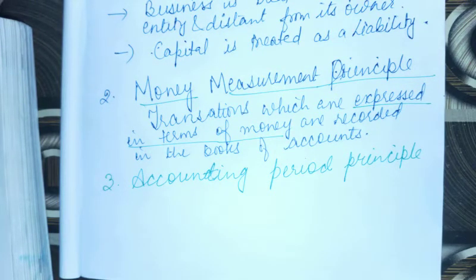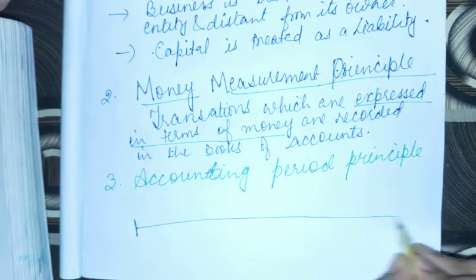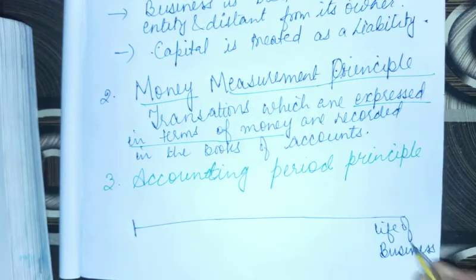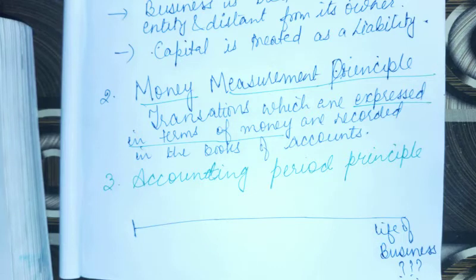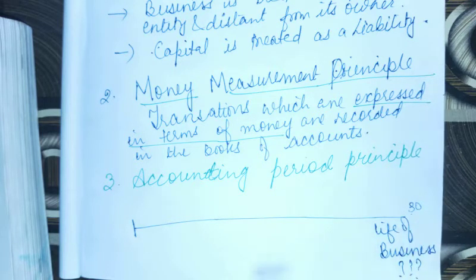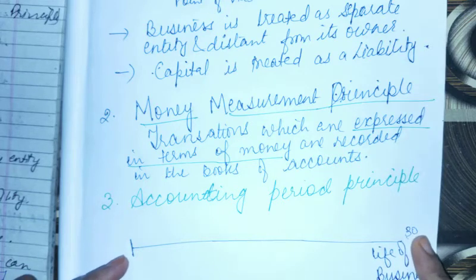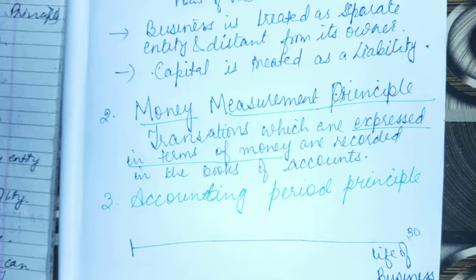आपने पहले Going Concern Concept पढ़ा था — इसमें हम लोग जब भी business start करते हैं, यह सोचकर करते हैं कि हमारा business बहुत लंबे सालों तक चलेगी. माल लो मेरा business 30 years तक चलेगा. तो क्या हम business के 30 years के बाद पता करेंगे कि profit हुआ या loss हुआ? No, this is not possible.